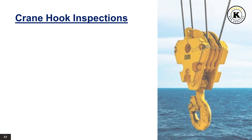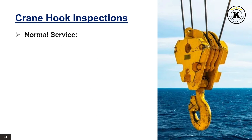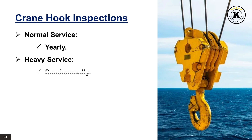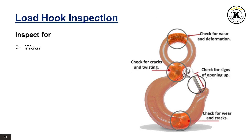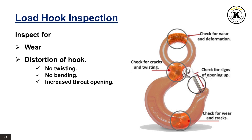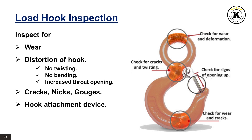Crane hook inspections: normal service to be performed yearly, heavy service semi-annually, and severe service quarterly. For load hook inspection, inspect for wear; for distortion of the hook to ensure no twisting, no bending, and no increased throat opening; for cracks, nicks, and gouges; for hook attachment device; and for latch damage or malfunction.